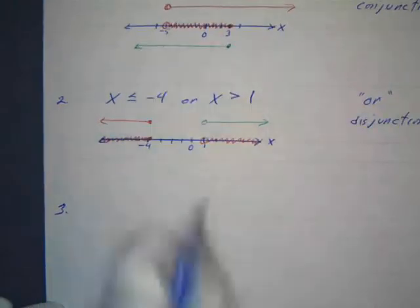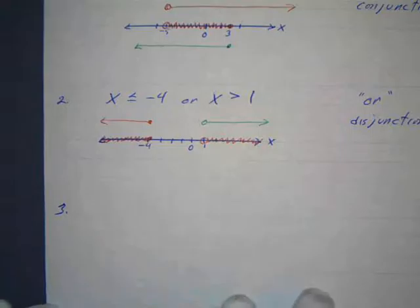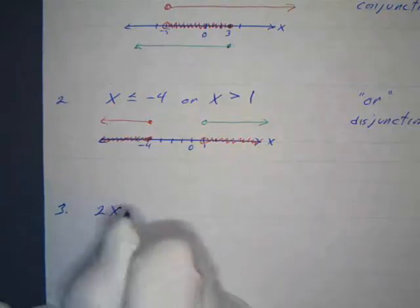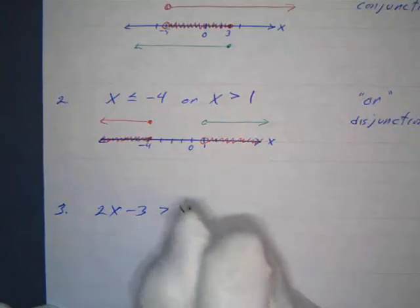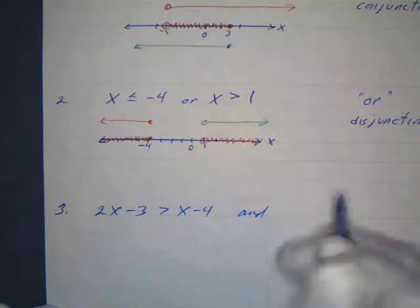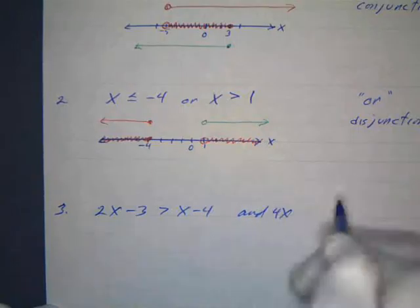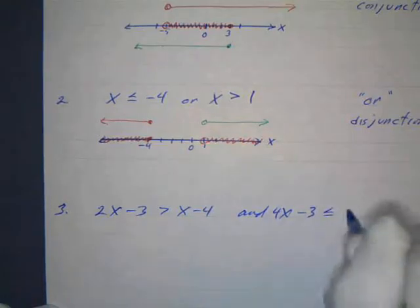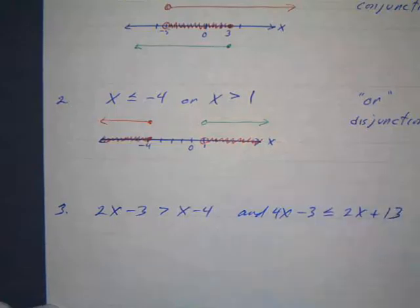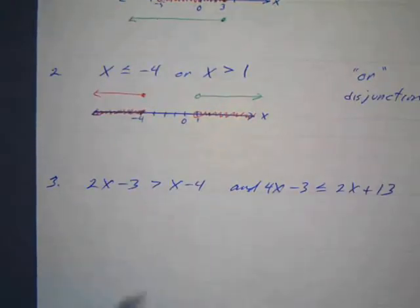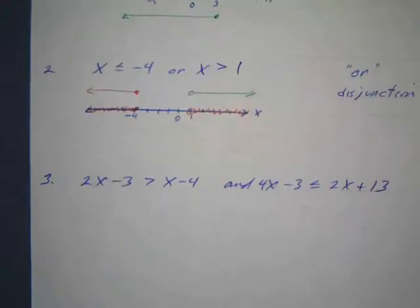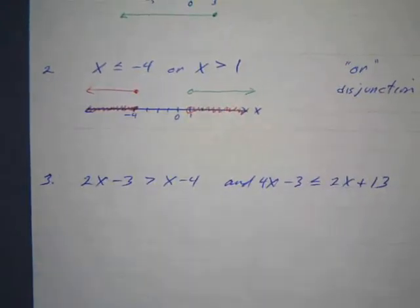Those were simple examples showing what you'd have after simplifying. Now let's try something more challenging. We have a compound inequality joined by 'and': 2x minus 3 is greater than x minus 4, AND 4x minus 3 is less than or equal to 2x plus 13. We want to solve each inequality separately and reduce them to simpler forms.